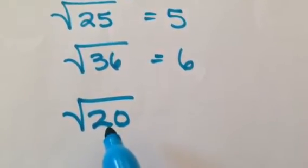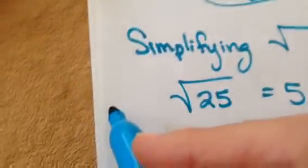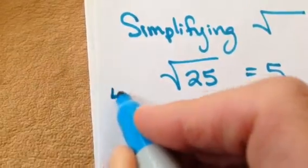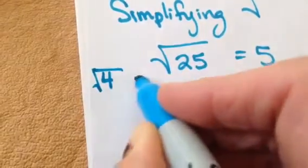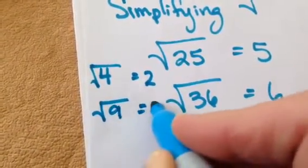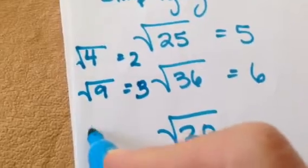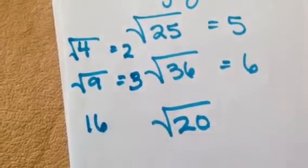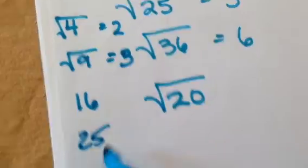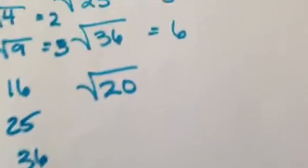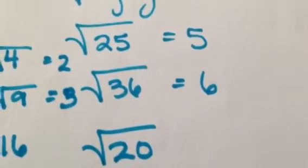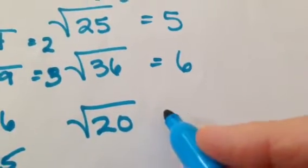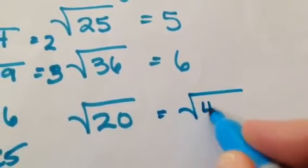Let's think about some of your easy perfect squares. 4 is a perfect square because the square root of 4 is 2. 9 is a perfect square because it gives you 3. And 16 is a perfect square because the square root of 16 is 4. And 25, 36, and of course 100 — there's a whole bunch. But I'm looking for perfect squares that might be in 20, and I always try the smallest first, like 4. Do you see that 4 goes in there? I could write this as 4 times 5.